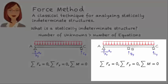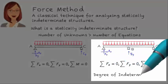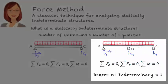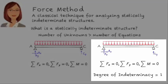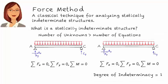In this example, the beam has a degree of indeterminacy of one. That is, if we remove one of the unknowns, the structure becomes statically determinate. For example, if we remove the support reaction at B, we get a simply supported beam. So now let's talk about the force method.